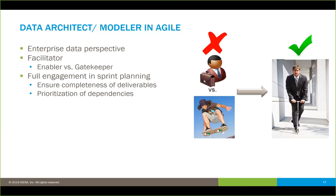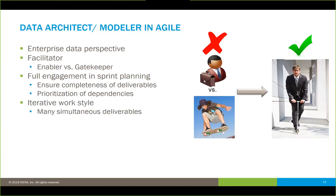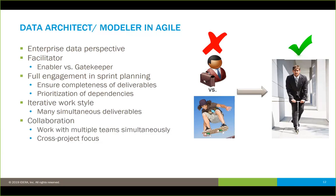You really want to be an enabler versus a negatively perceived gatekeeper. Get rid of the us-versus-them mentality. You want that blend of business background and the ability to communicate equally with business stakeholders and technical teams — really bridge that gap. Your data modeler needs full engagement at all sprint planning sessions. You need to ensure the completeness of deliverables and make sure the team understands prioritization of dependencies, including data-driven dependencies beyond just referential integrity. With multiple teams simultaneously, you maintain a cross-project focus, which gives you visibility of what's going on across projects — knowledge that can be brought to bear on all other projects as well.